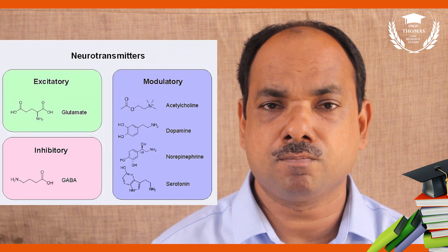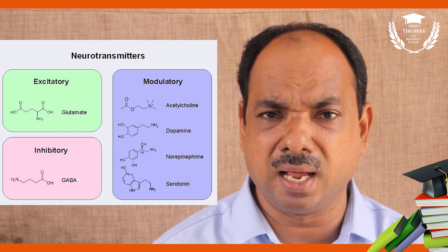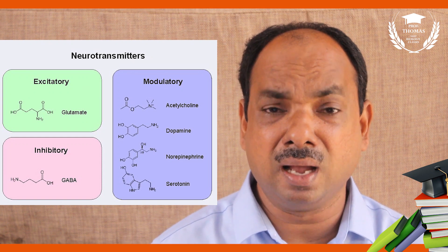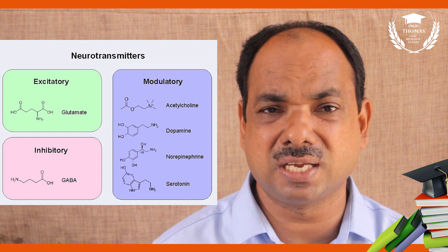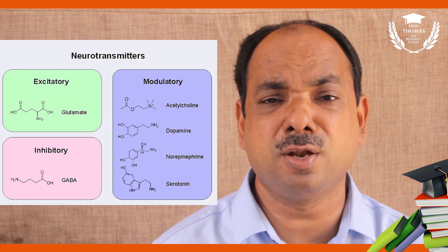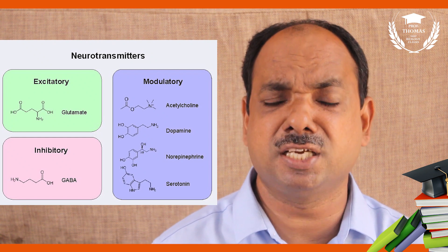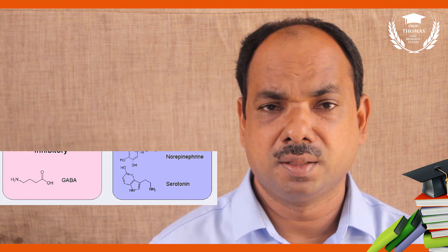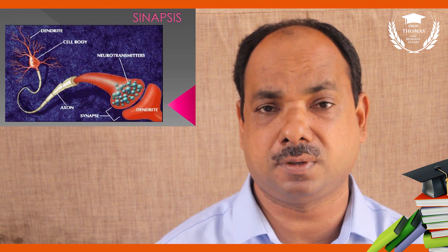Examples of neurotransmitters include acetylcholine, dopamine, adrenaline, serotonin, GABA, glycine, glutamine, and endorphins. Even gaseous neurotransmitters are present. The junction between the axonite of one neuron and the dendrite of another neuron is called a synapse or synaptic cleft.